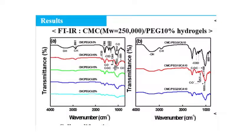The chemical structure of the hydrogel was investigated using Fourier-transform infrared spectroscopy. It can be observed that the hydrogel peak shifts due to the PEG intercalation between the CMC chains, and the concentration of the CA cross-linking agents in the molecular weight 250,000 CMC and PEG 10% hydrogel increases.